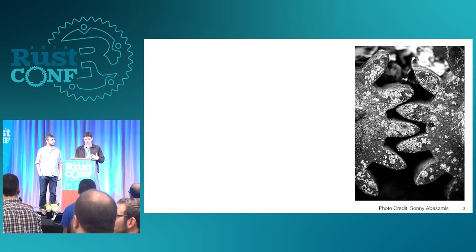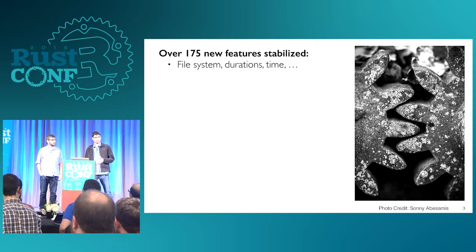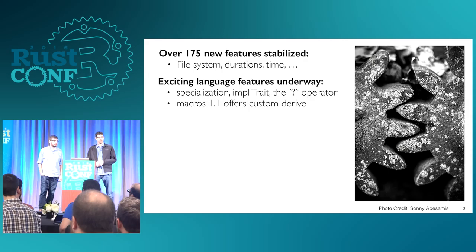In the library, when we first released 1.0 we had a minimal but stable API surface. We've expanded that dramatically — we've added 175 new features to the stable list covering all kinds of areas, so you can now really use the standard library for most tasks on stable. We've also been building a lot of language features: specialization, impl Trait, the question mark operator, macros 1.1 RFC.